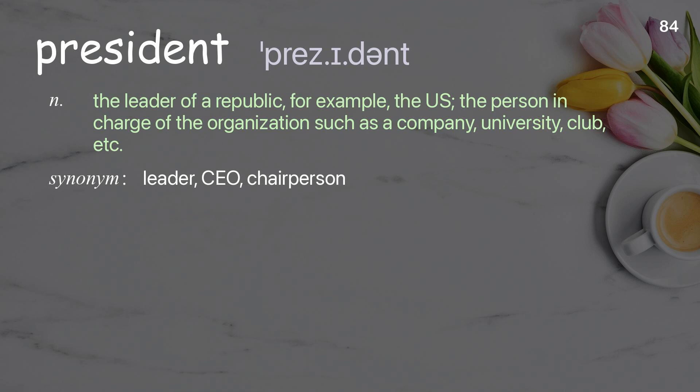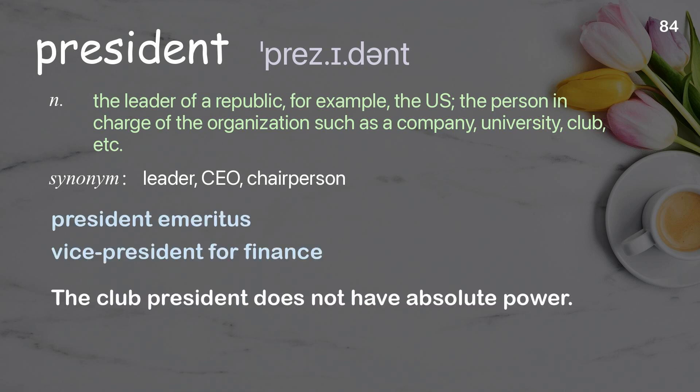President: the person in charge of the organization, such as a company, university, club, etc. Examples: President Emeritus, Vice President for finance. The club president does not have absolute power.